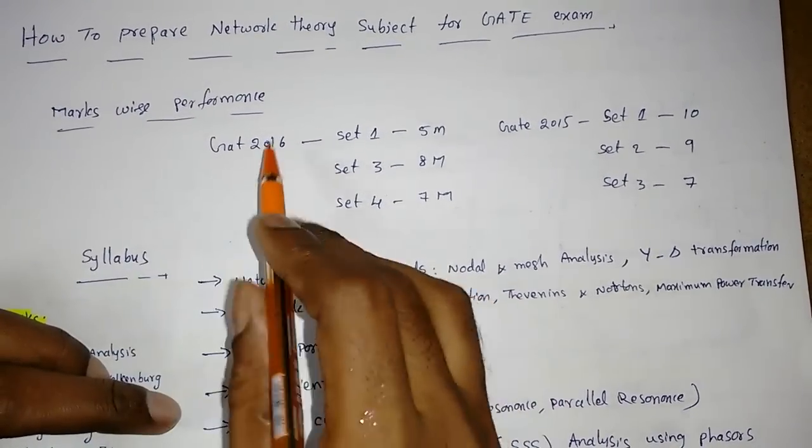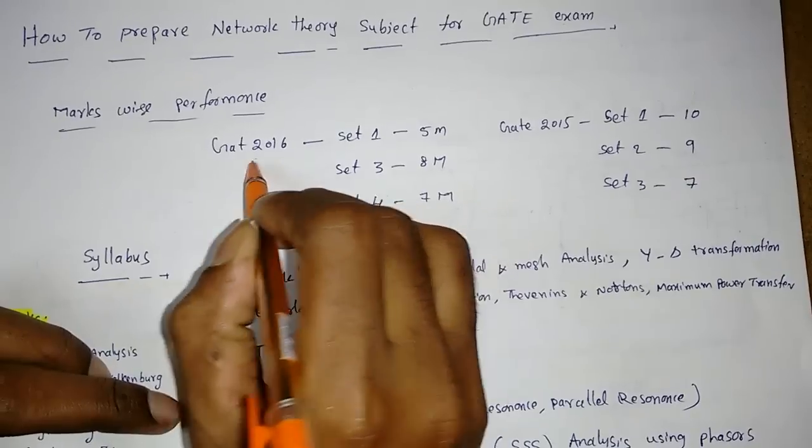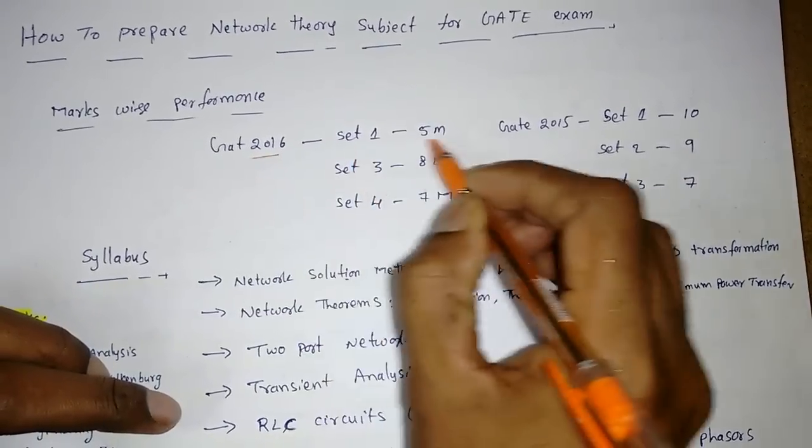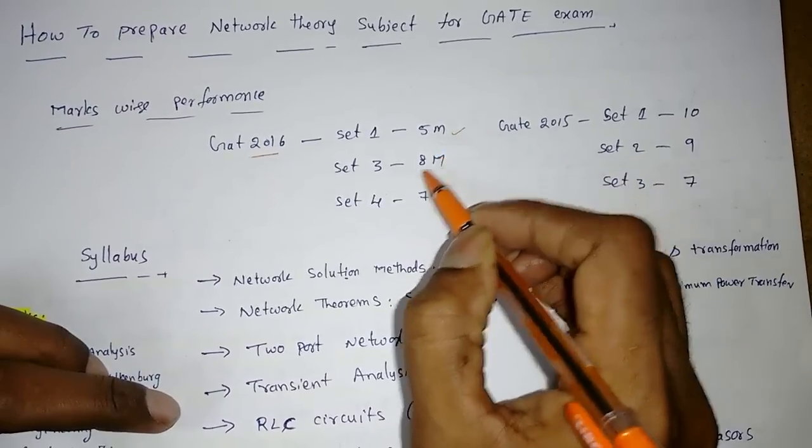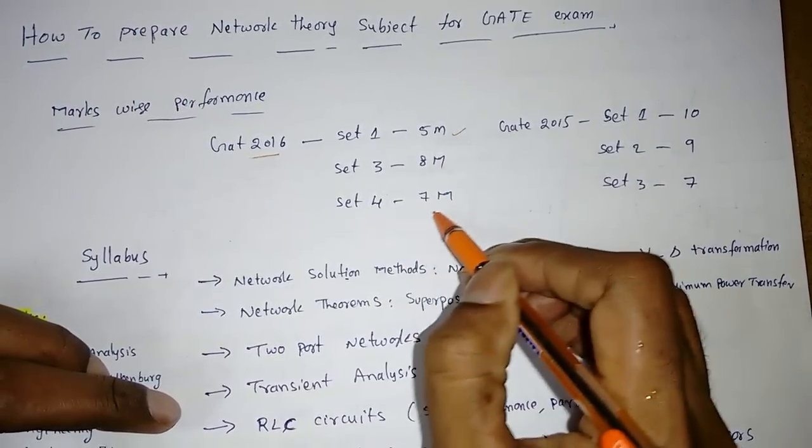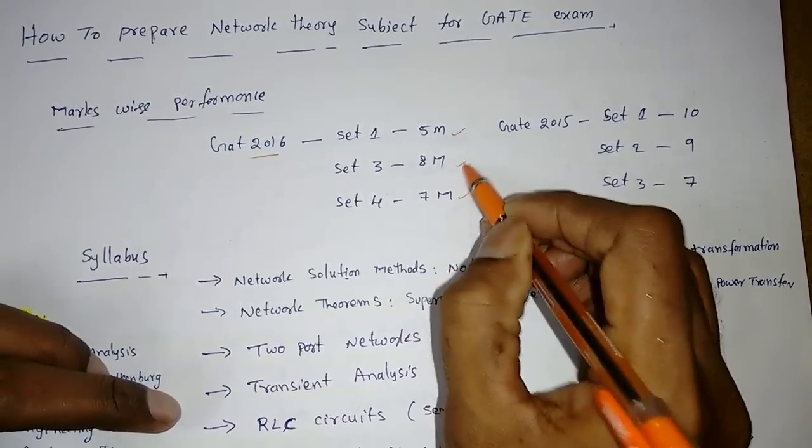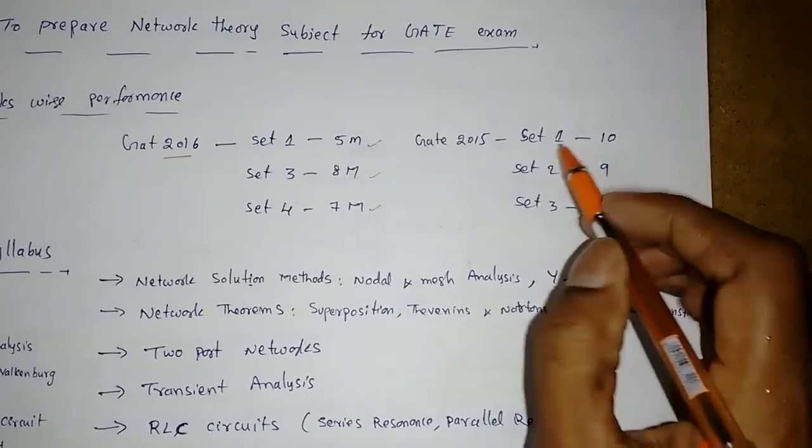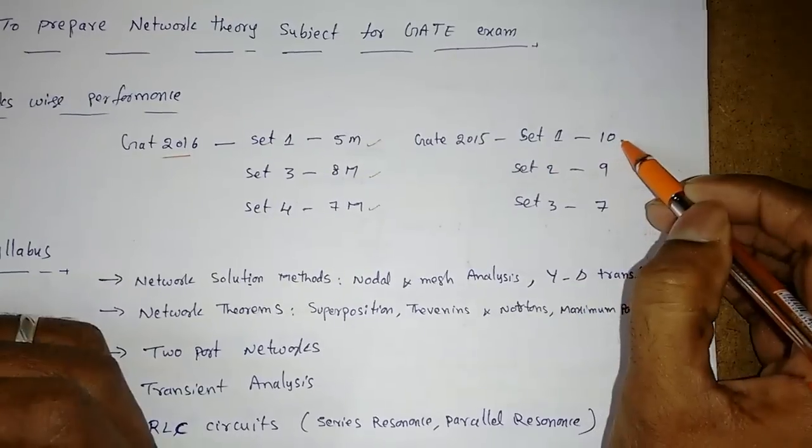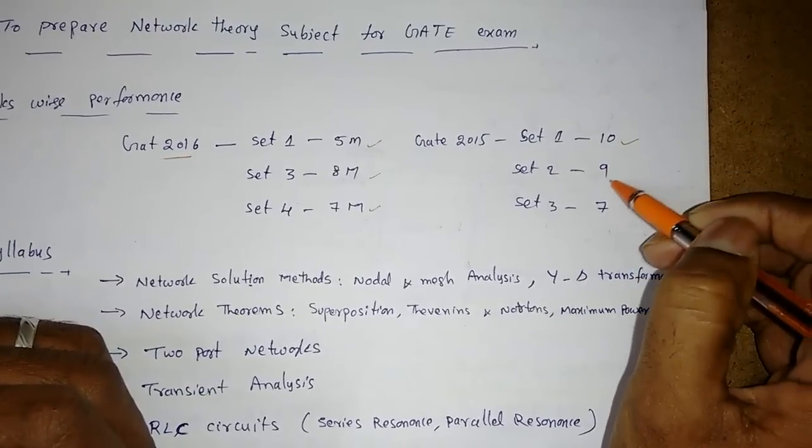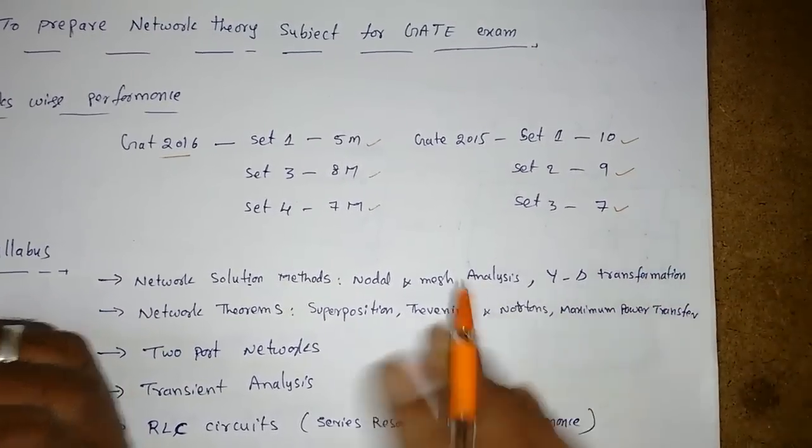If you see mark-wise performance in GATE 2016, in set 1 five marks, set 3 eight marks, set 4 seven marks, the questions came from network theory. In 2015, set 1 ten marks, set 2 nine marks, set 3 seven marks.